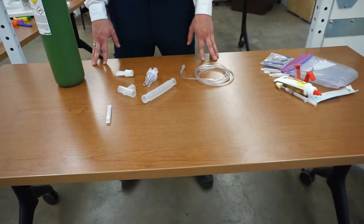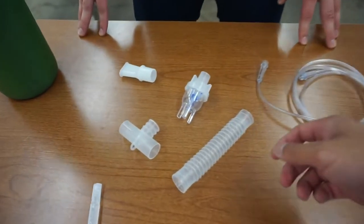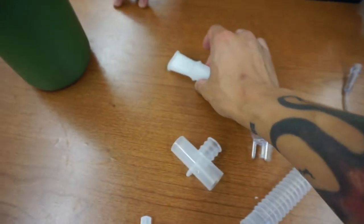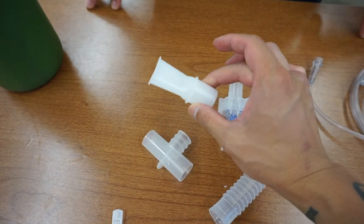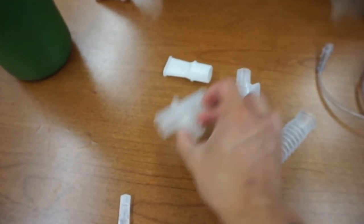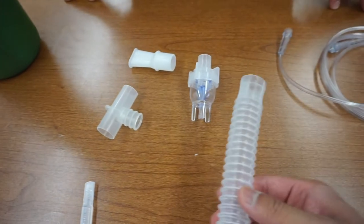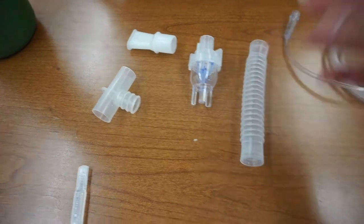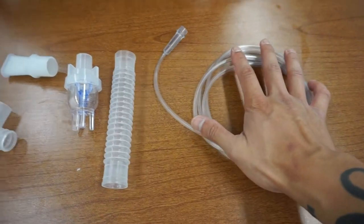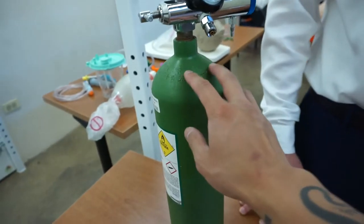When you open the packaging of the nebkit, you're going to have several pieces: the chamber where you apply the albuterol, a mouthpiece where the patient applies their mouth, a T-piece that goes on top of the chamber, a blow-off valve to blow off residual albuterol, and tubing to connect the nebkit to the oxygen tank.